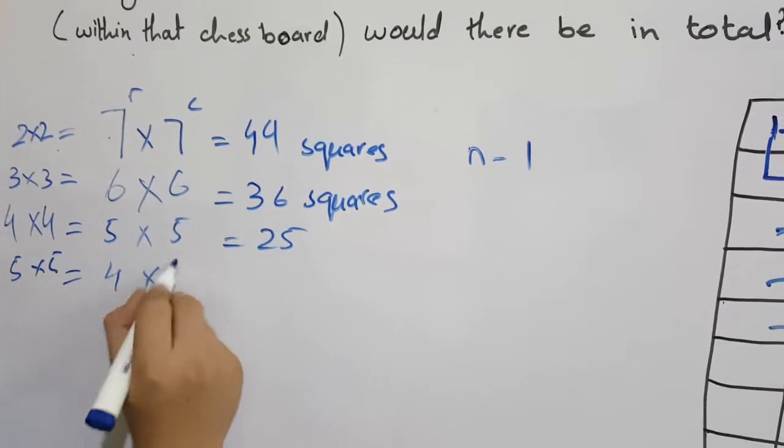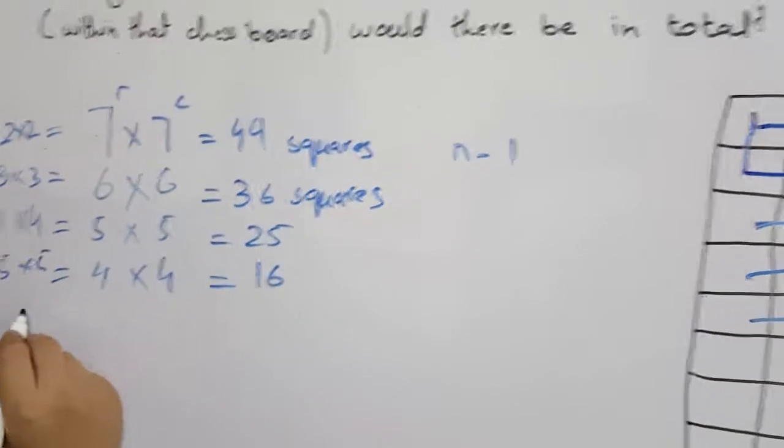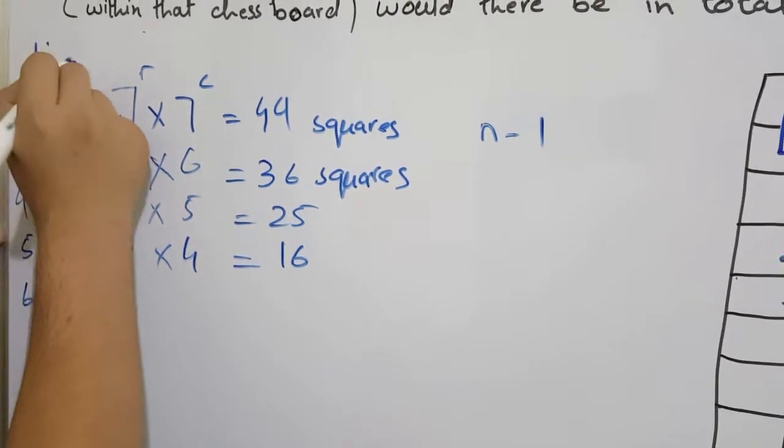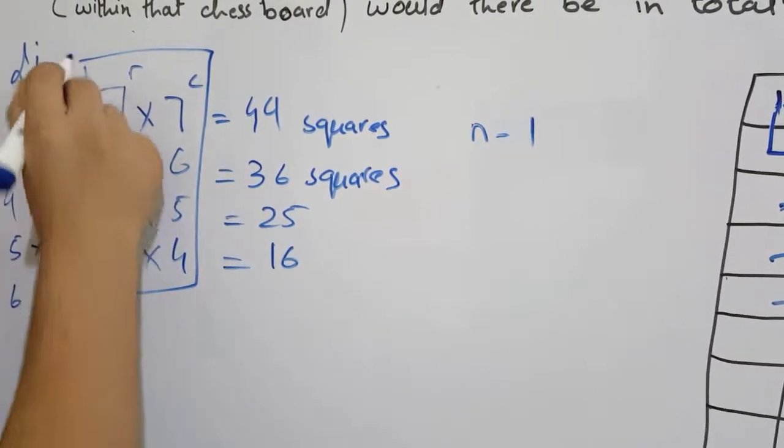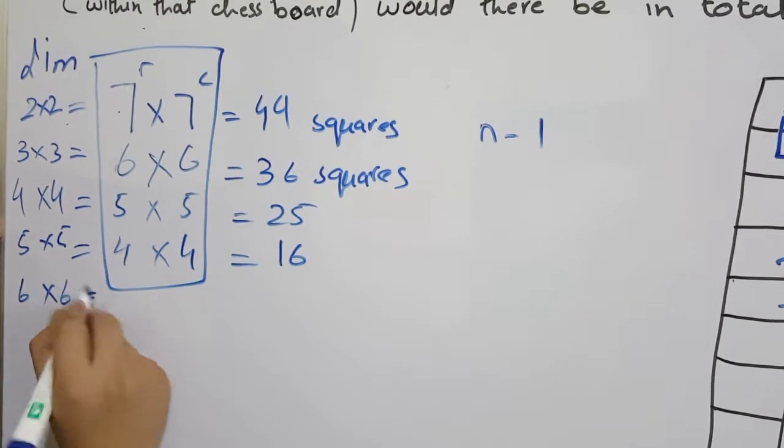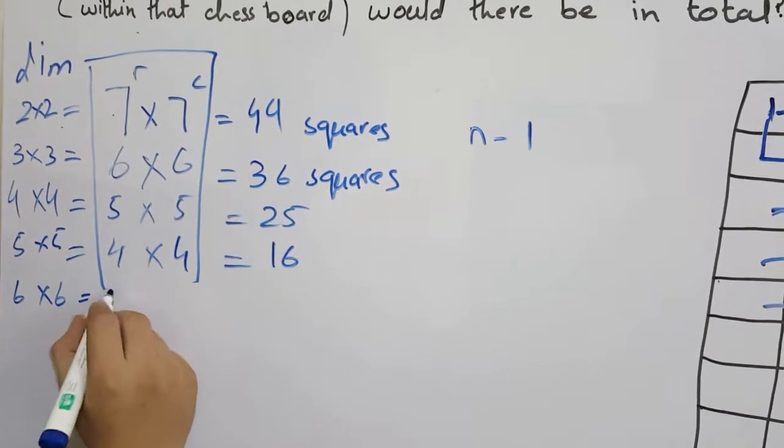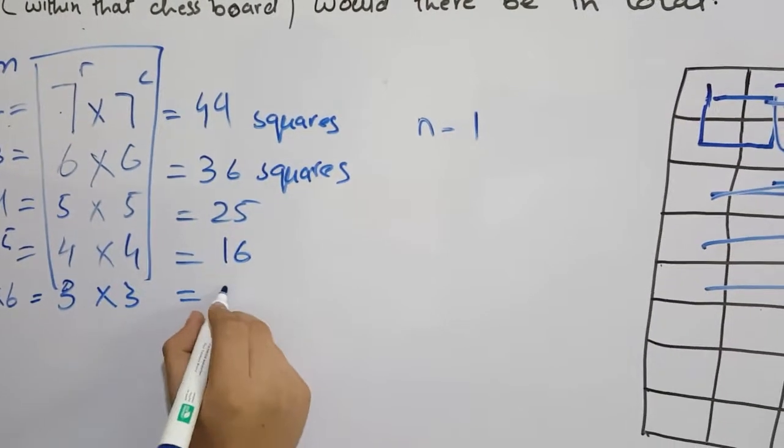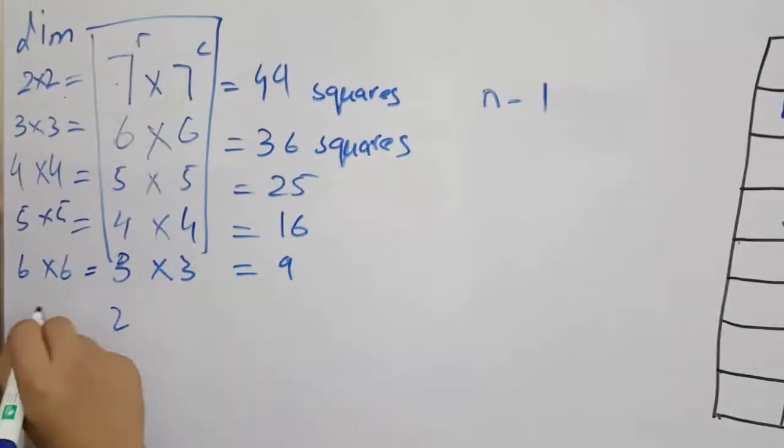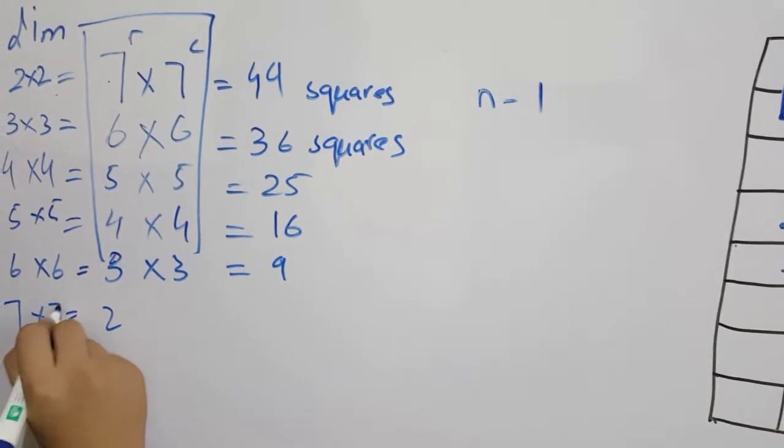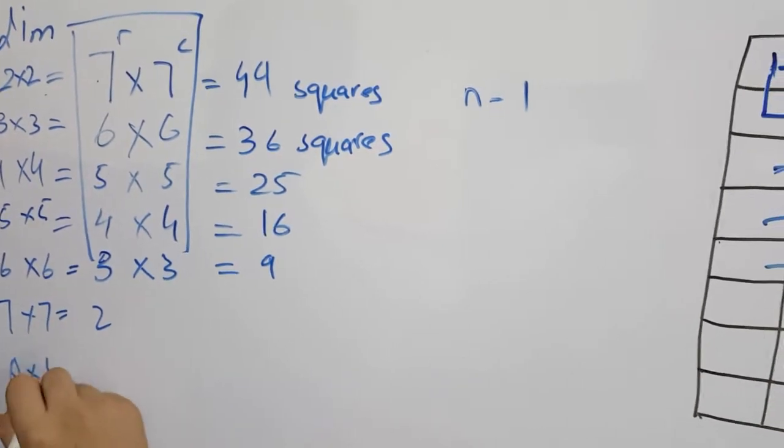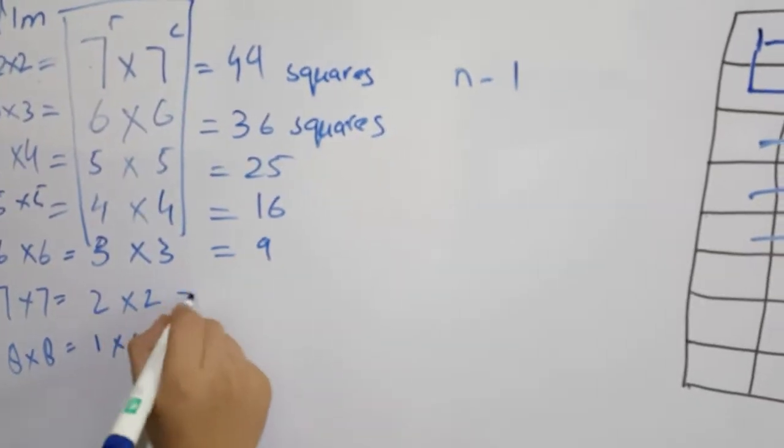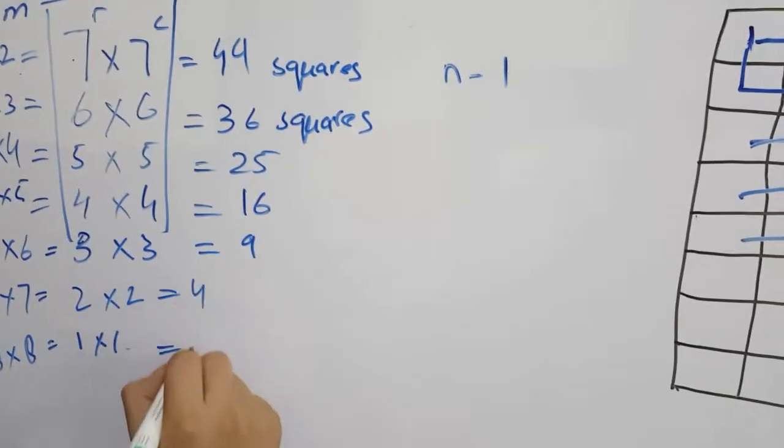And, it's a 4x4, 16, and here, this dimension, and this is your total number of squares. Now, that's 3x3, 9, 7x7, 8x8, 1x1, 2x2.